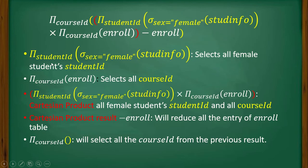Let's break down this query. The first part, highlighted in yellow, is the projection of student ID where sex equals female from student_info. This selects all female students' student IDs. The next part is the projection of course ID from enroll, which selects all the course IDs from the enroll relation.